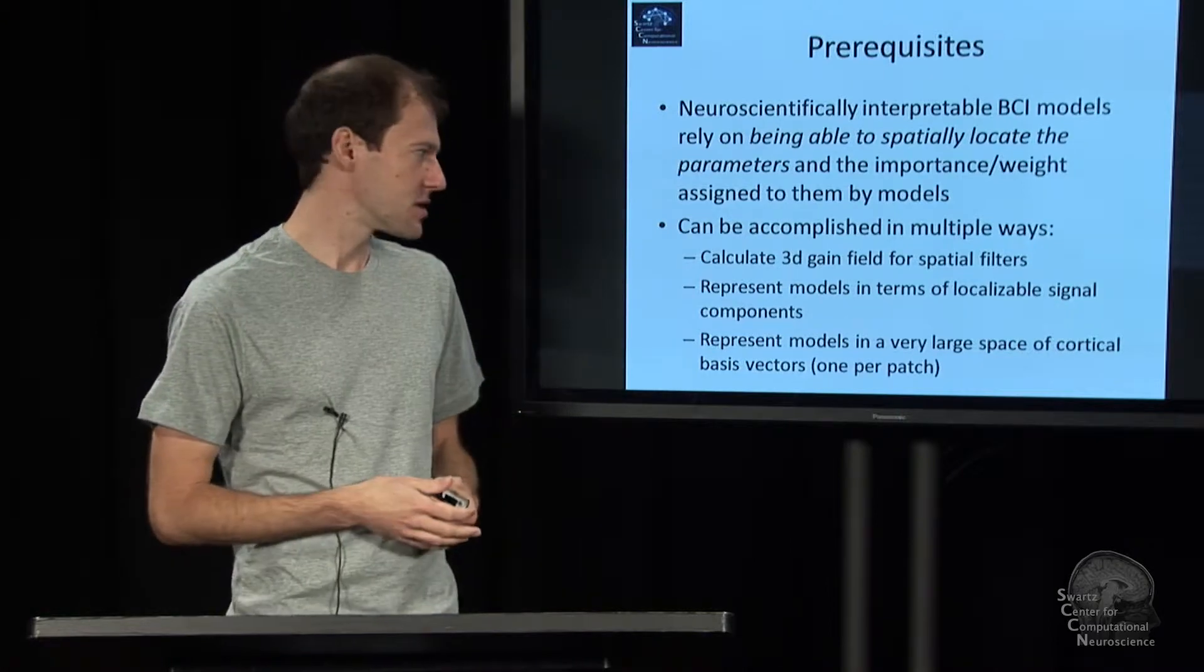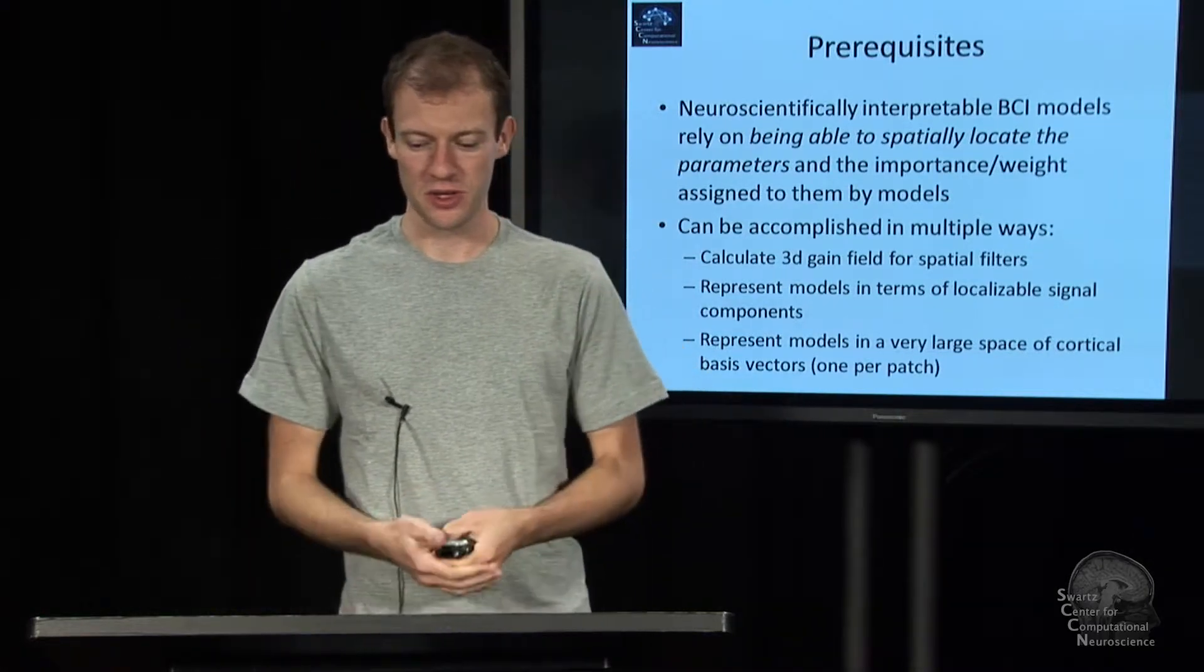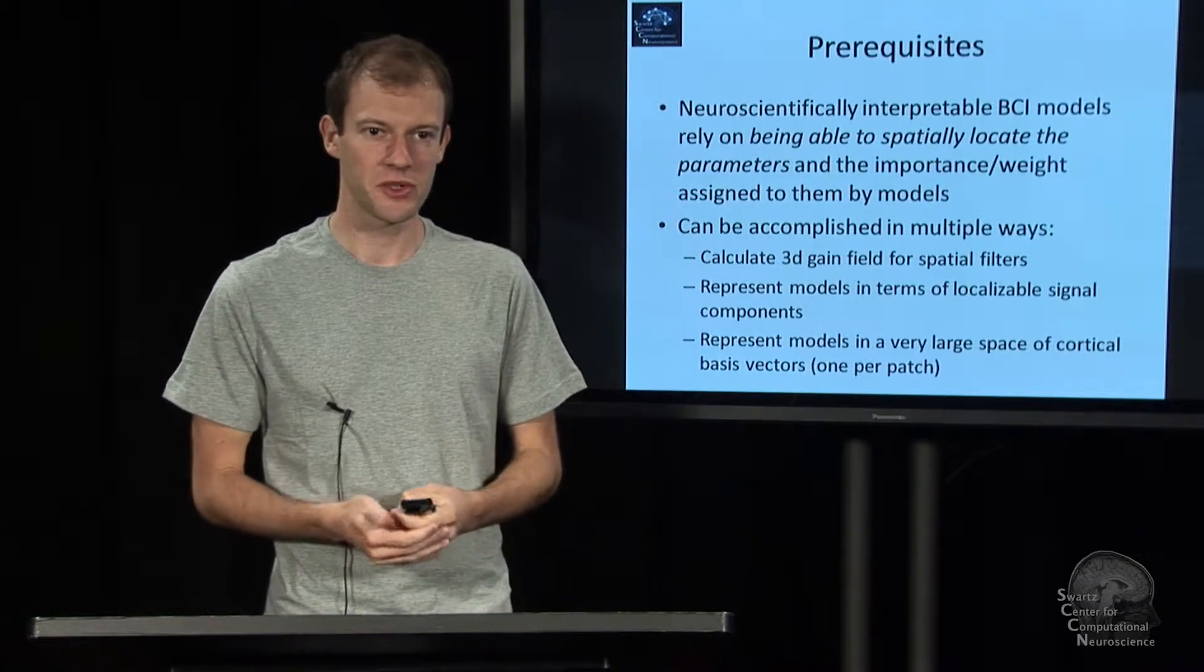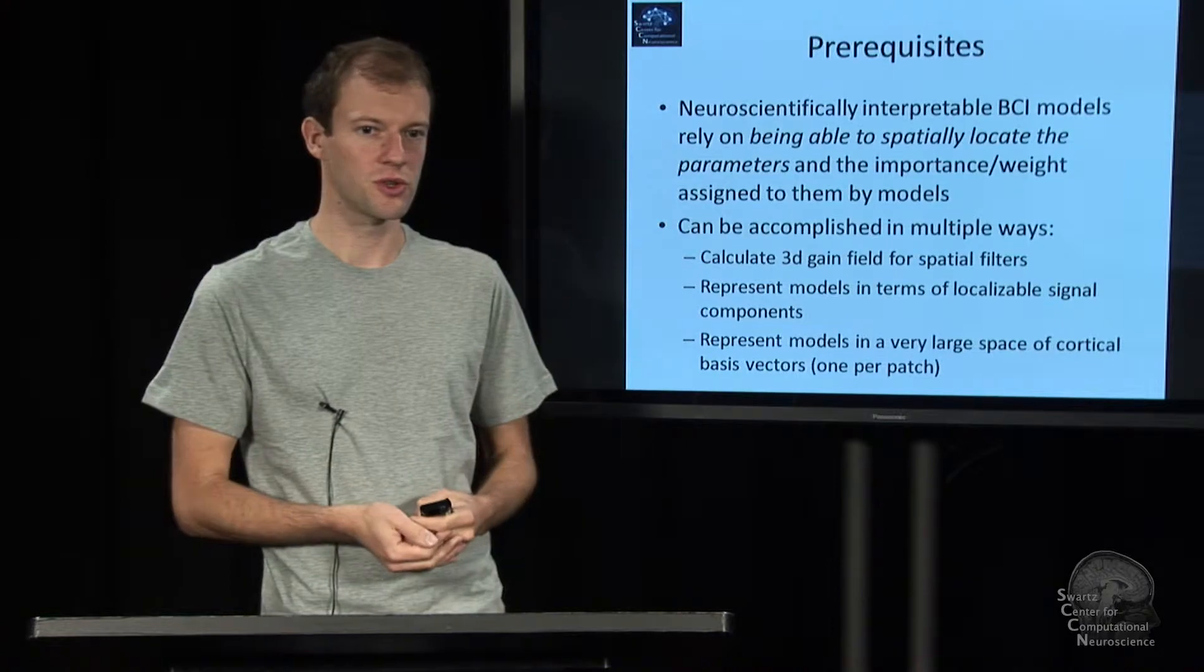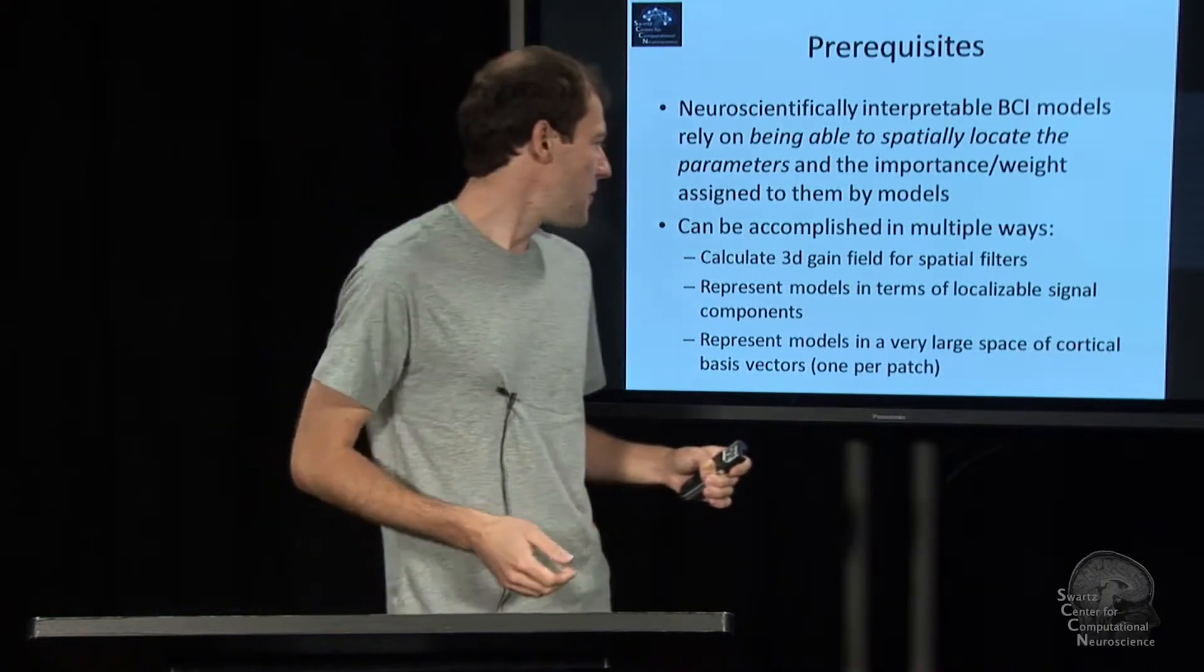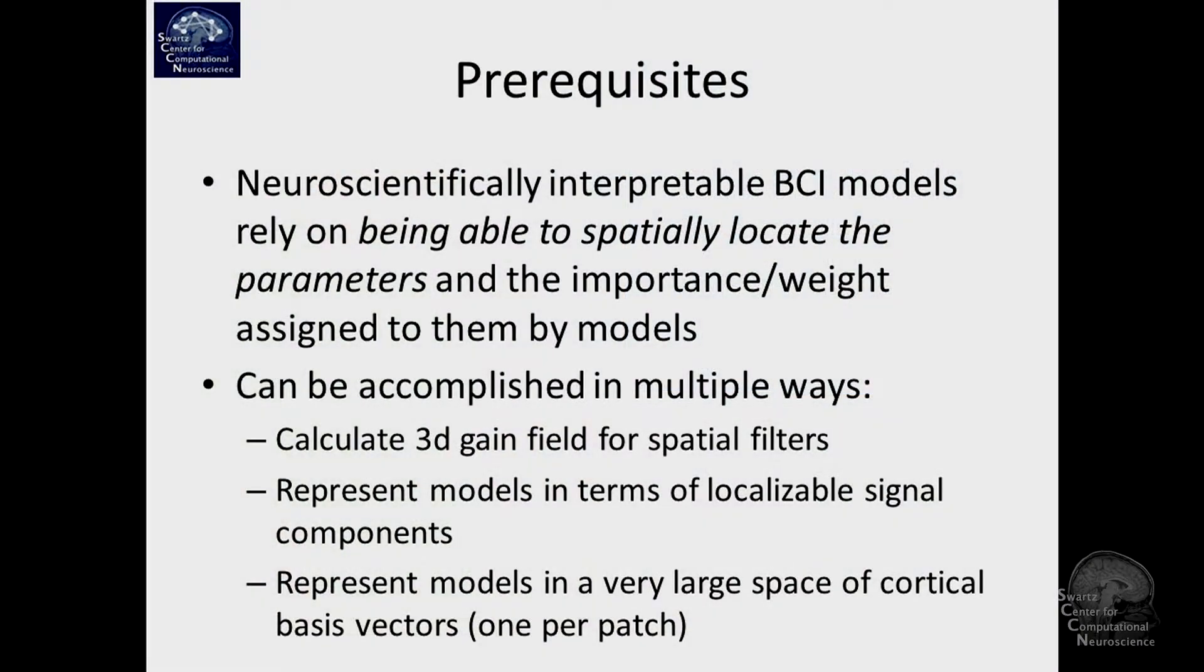There are toolboxes for that. For example, the toolbox NFT, which is a plugin to EEGLAB, has ways to calculate these kinds of forward mappings, and there's other work by other researchers which is also useful for that. Another alternative way is to directly represent your models in terms of components of the signal that are themselves localized or localizable.